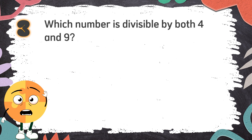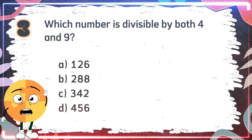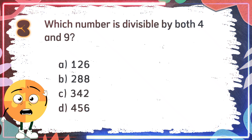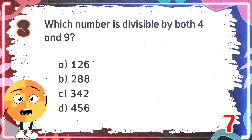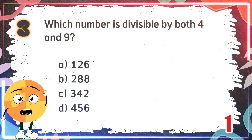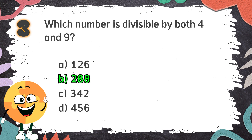Number 3: Which number is divisible by both 4 and 9? Again, which number is divisible by both 4 and 9? The choices are: A. 126, B. 288, C. 342, D. 456. The correct answer is B. 288.